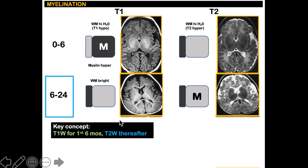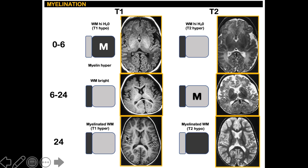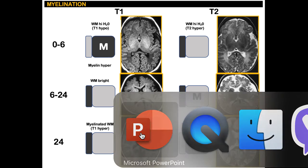To summarize: use T1 for the first six months to assess myelination, and T2 thereafter.